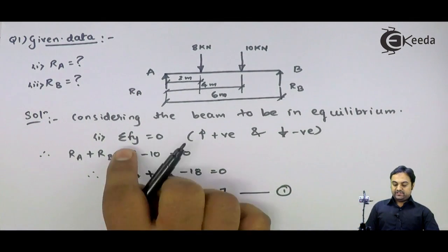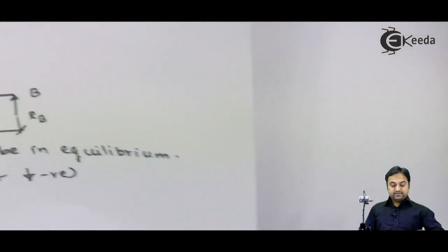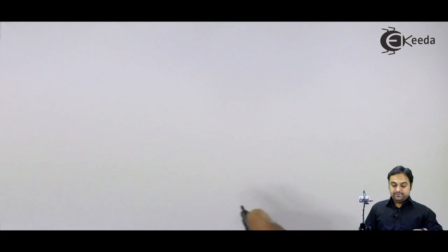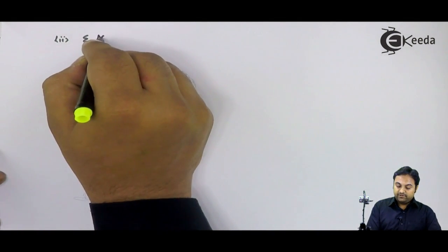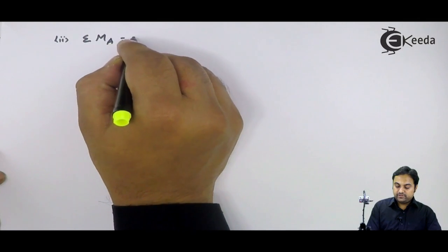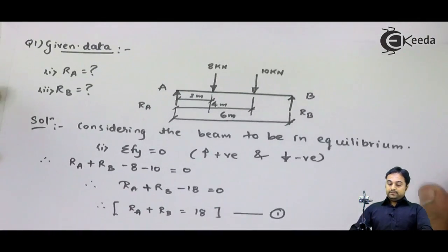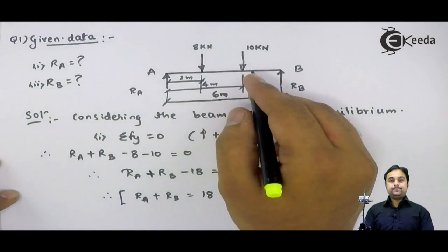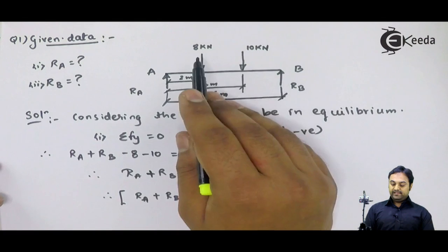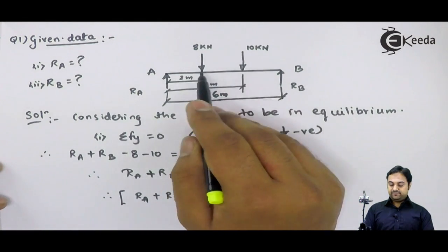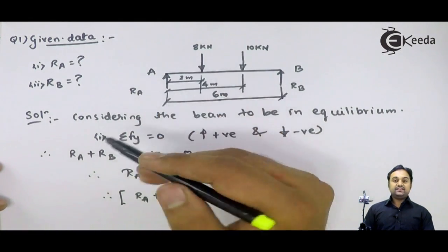After writing summation of Fy, I will use the second condition of equilibrium. The sum of moments of all forces about A equals 0. Since the forces are at a distance from A, I will calculate the moment produced by each force at point A.